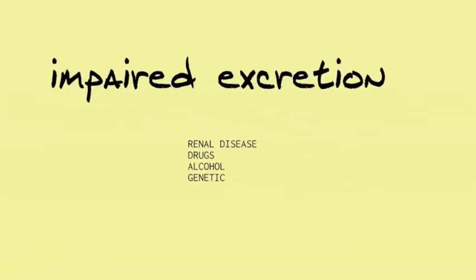Uric acid can also be increased in the blood by impaired excretion, and this can occur in renal disease, with drugs — notably diuretics — alcohol, and genetic factors again.